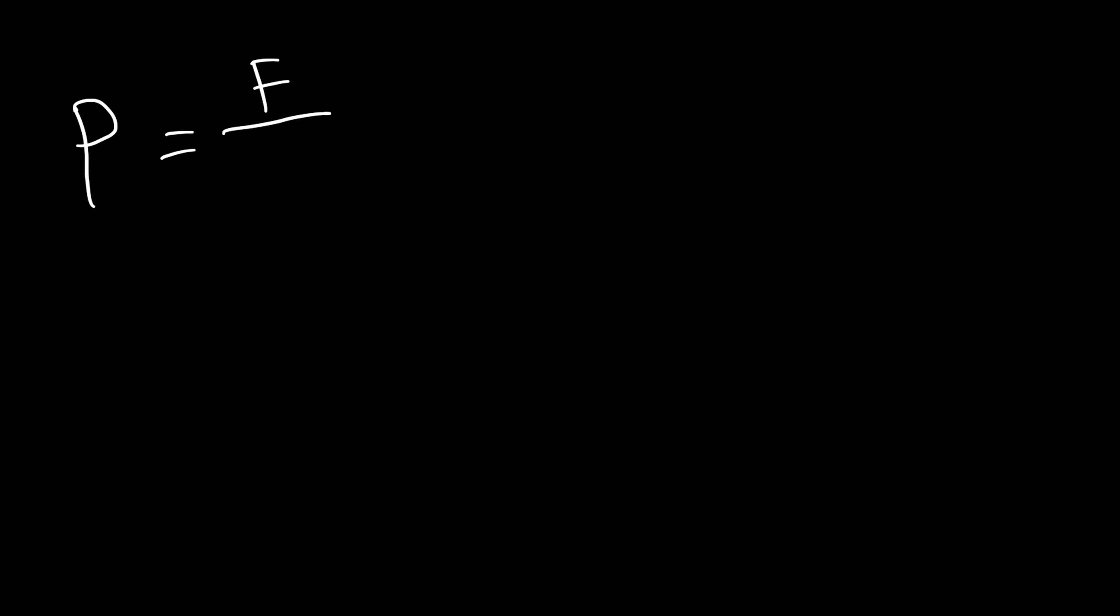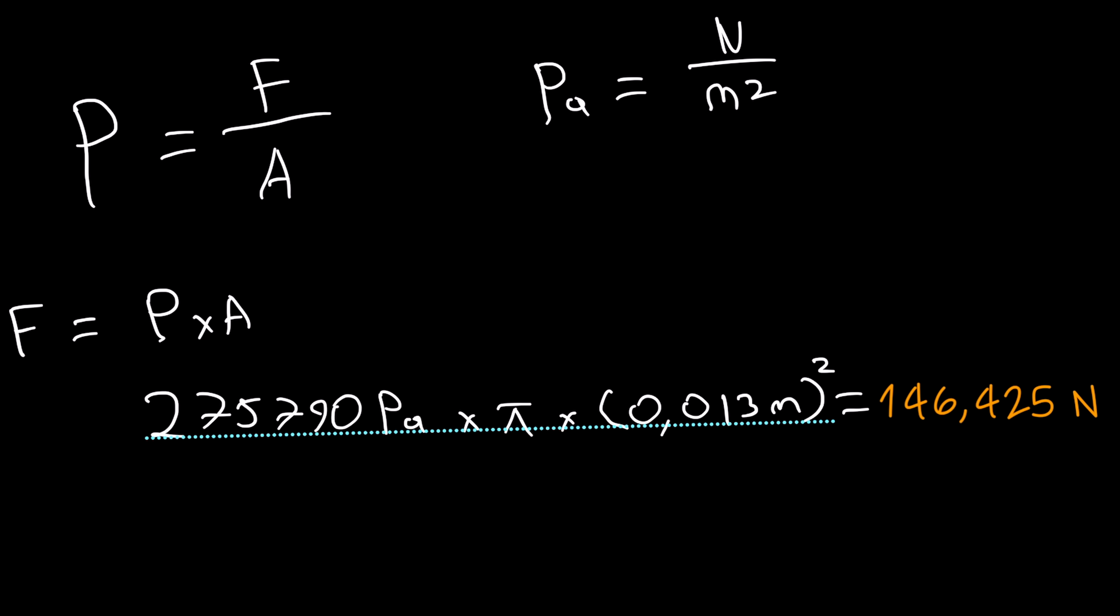I want this compressor to reach 40 PSI so let's calculate how much force is needed to push this piston. 40 PSI pressure, pressure equals force divided by area. Let's rearrange the equation: force equals pressure times the area. 40 PSI is 275,790 pascals times the piston's area pi times 0.013 meters squared, it makes 146 newtons which is about 14 kilograms of force applied to a tiny piston.